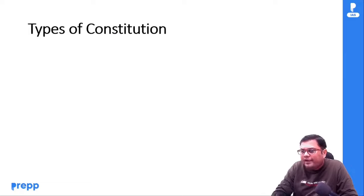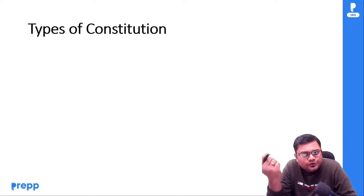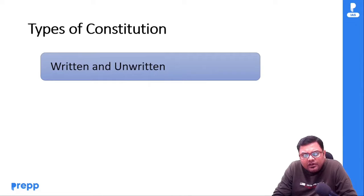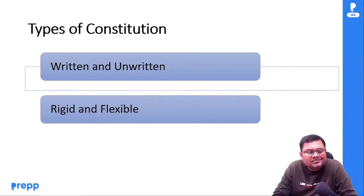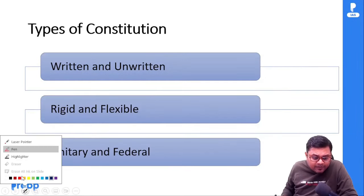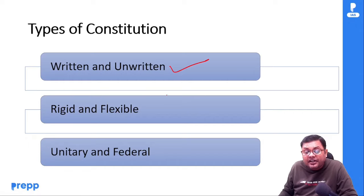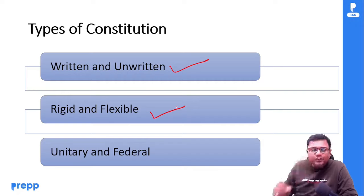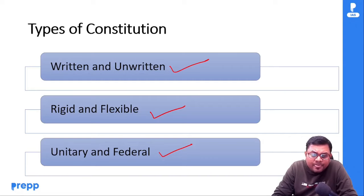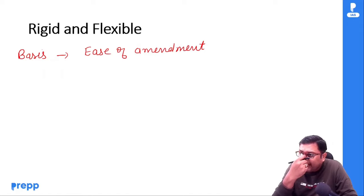अब आते हैं types of constitution पे। Generally three types हैं: one is written and unwritten, second is rigid and flexible, and third is unitary and federal। सबसे पहले rigid and flexible constitution discuss करते हैं। इनको differentiate करने का basis है ease of amendment — कितनी आसानी से constitution में amendment हो सकता है। Amendment means any change in constitution।